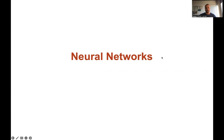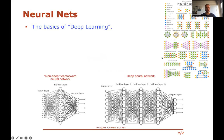Neural networks are the basics of deep learning. Maybe you've already seen figures like these — neural networks are typically drawn with these so-called neurons connected by wires in several layers. You have an output layer at the end, multiple layers in the middle, and there are many different types of architectures designed for these neural networks.